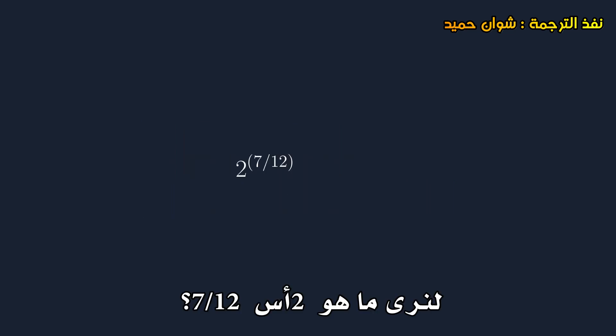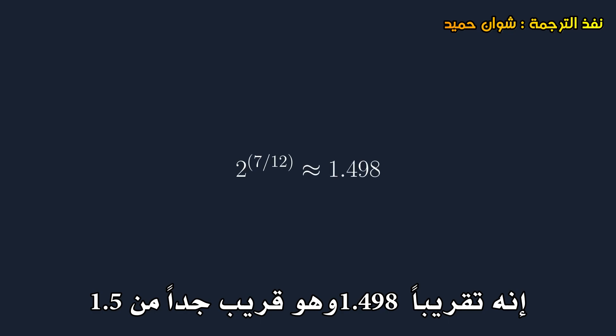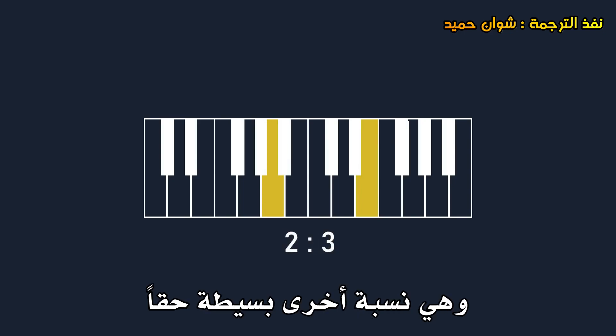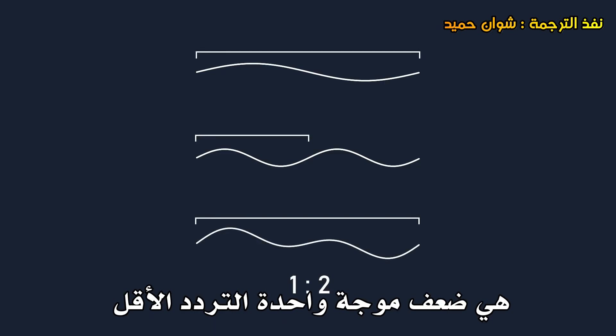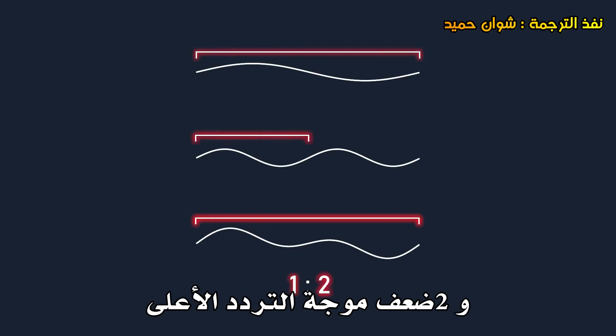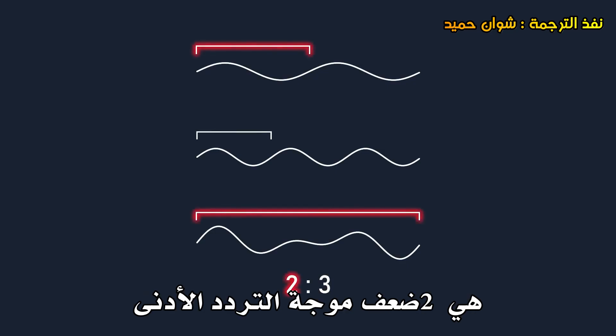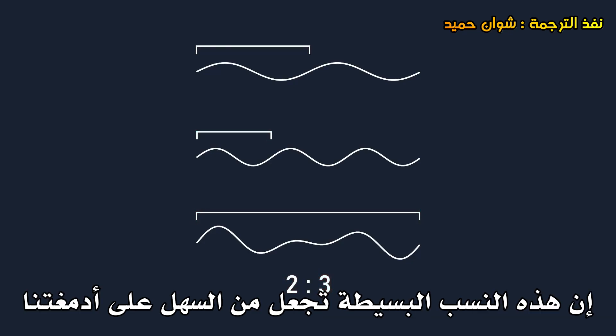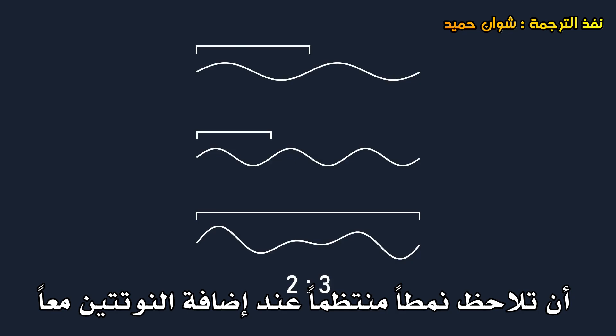Let's see what 2 to the power of 7 over 12 is. It is approximately 1.498, which is quite close to 1.5. 1 to 1.5 simplifies to 2 to 3, another really simple ratio. The reason a simple whole number ratio sounds so consonant probably has to do with the period of the resulting wave when the two waves are added together. With a 1 to 2 ratio, the resulting wave's period is 1 times the lower frequency wave and 2 times the higher frequency wave. With a 2 to 3 ratio, the resulting period is 2 times the lower frequency wave and 3 times the higher frequency wave. These simple ratios make it easy for our brains to notice a regular pattern when the two notes are added together.